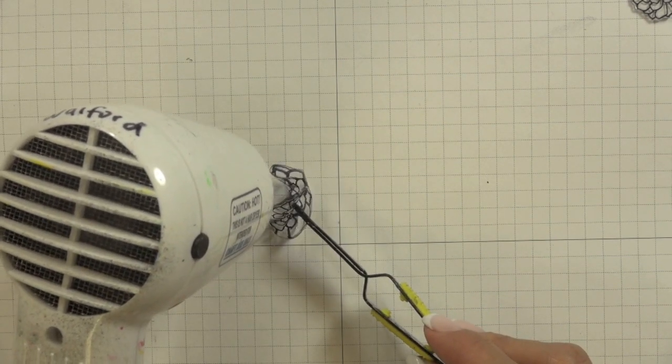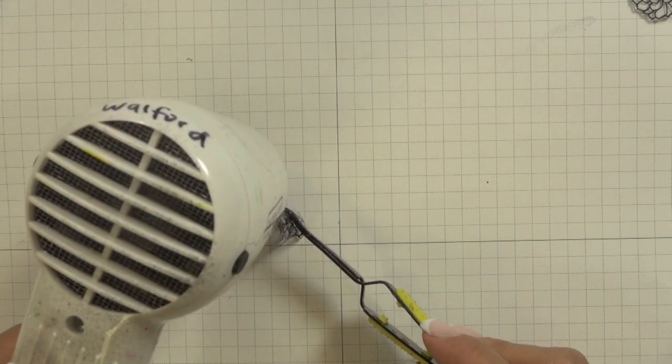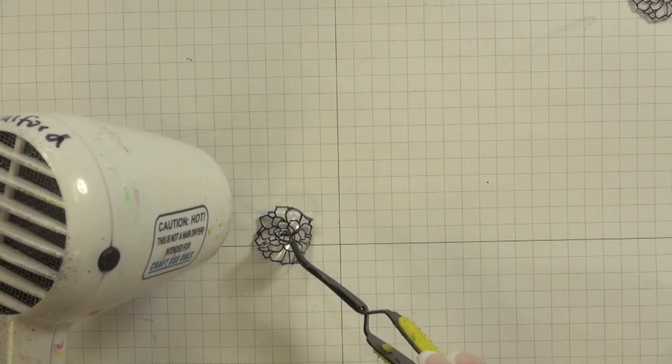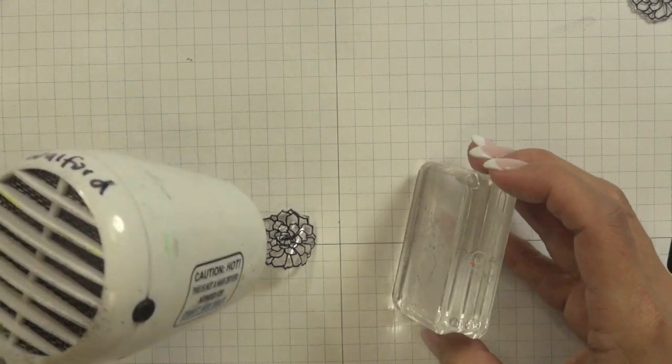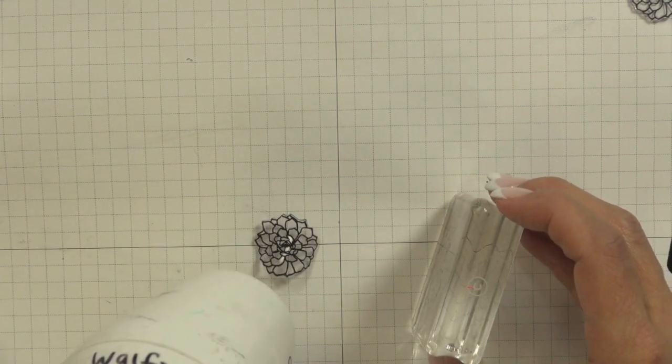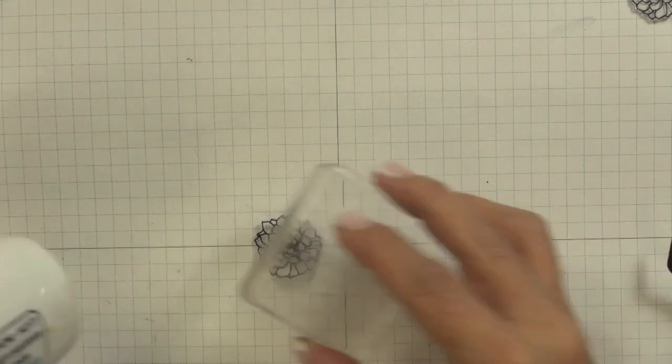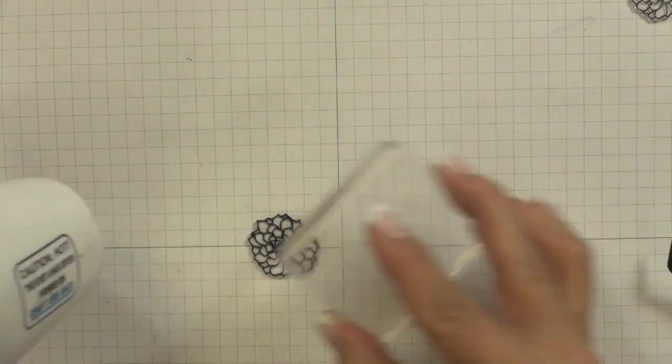You can see that the plastic kind of crumples as it shrinks but the neat thing about shrink plastic is that it eventually straightens out pretty much all the way and for that final little amount at the end there while the plastic's still hot I just grab an acrylic block and then press it down against my table to completely flatten it.